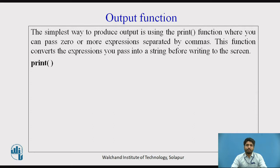Output function: The simplest way to produce output is using print function, where you can pass zero or more expressions separated by commas. This function converts the expression you pass into a string before writing to the screen. So for showing the output, we use the function print. We will see in detail in the coming slides.